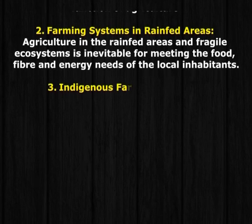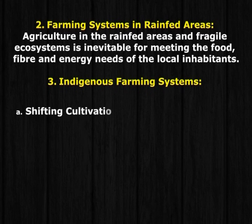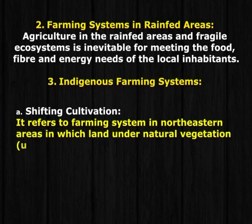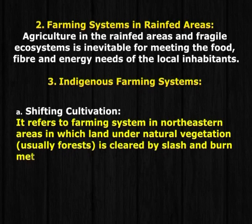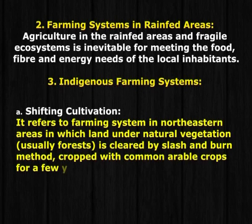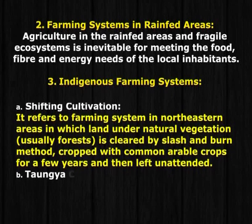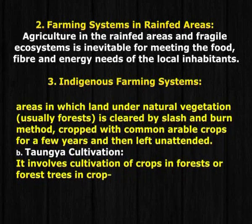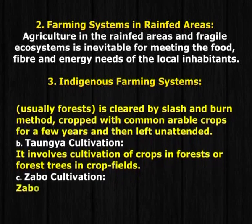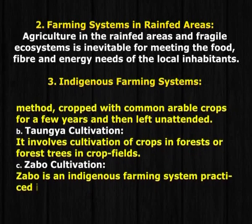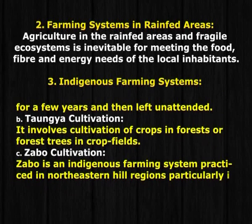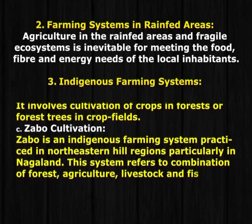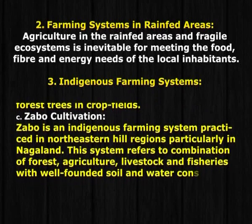3. Indigenous Farming System — Shifting Cultivation: It refers to a farming system in north-eastern areas in which land under natural vegetation, usually forest, is cleared by slash-and-burn method, cropped with common arable crops for a few years, and then left unattended. 4. Taungya Cultivation: It involves cultivation of crops in forests or among forest trees in crop fields. Jhum Cultivation: Jhum is an indigenous farming system practiced in north-eastern hill regions, particularly in Nagaland. This system refers to a combination of forest, agriculture, livestock, and fisheries with a well-founded soil and water conservation base.